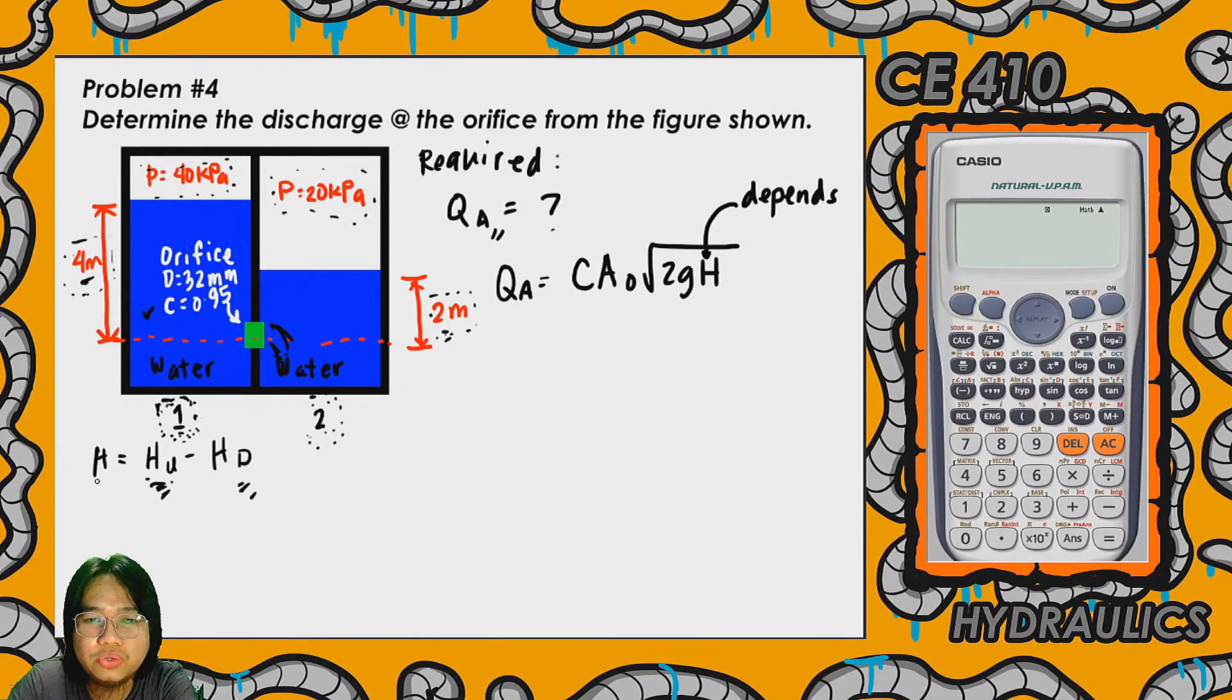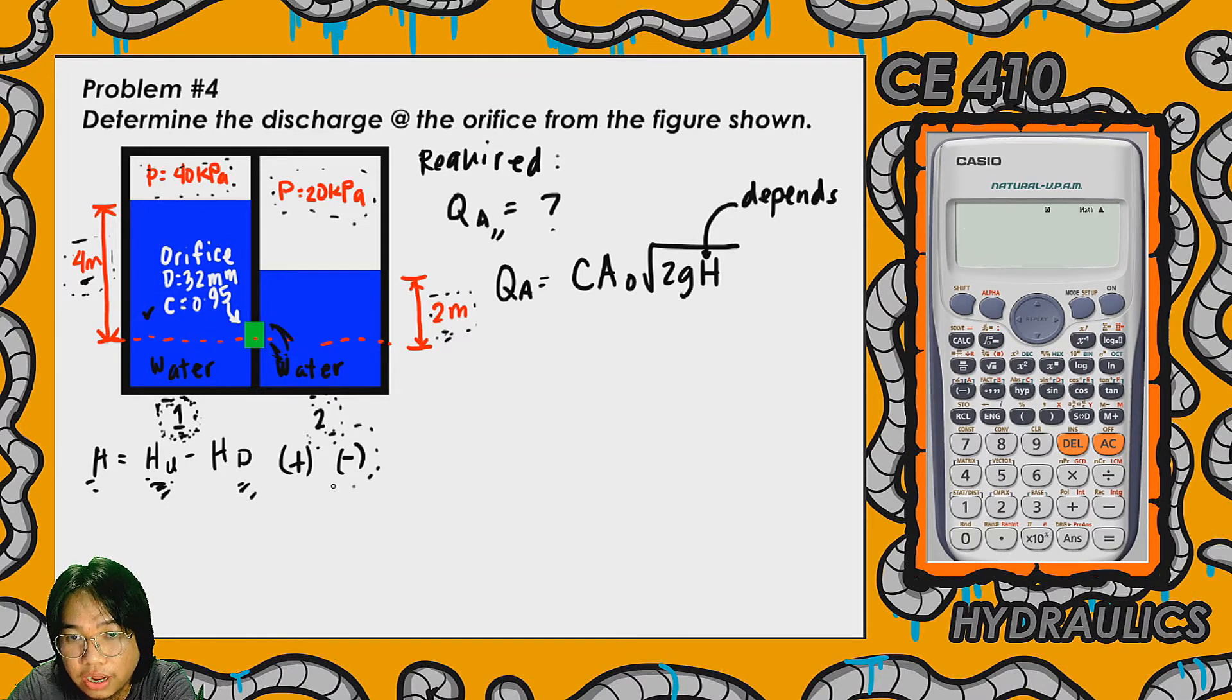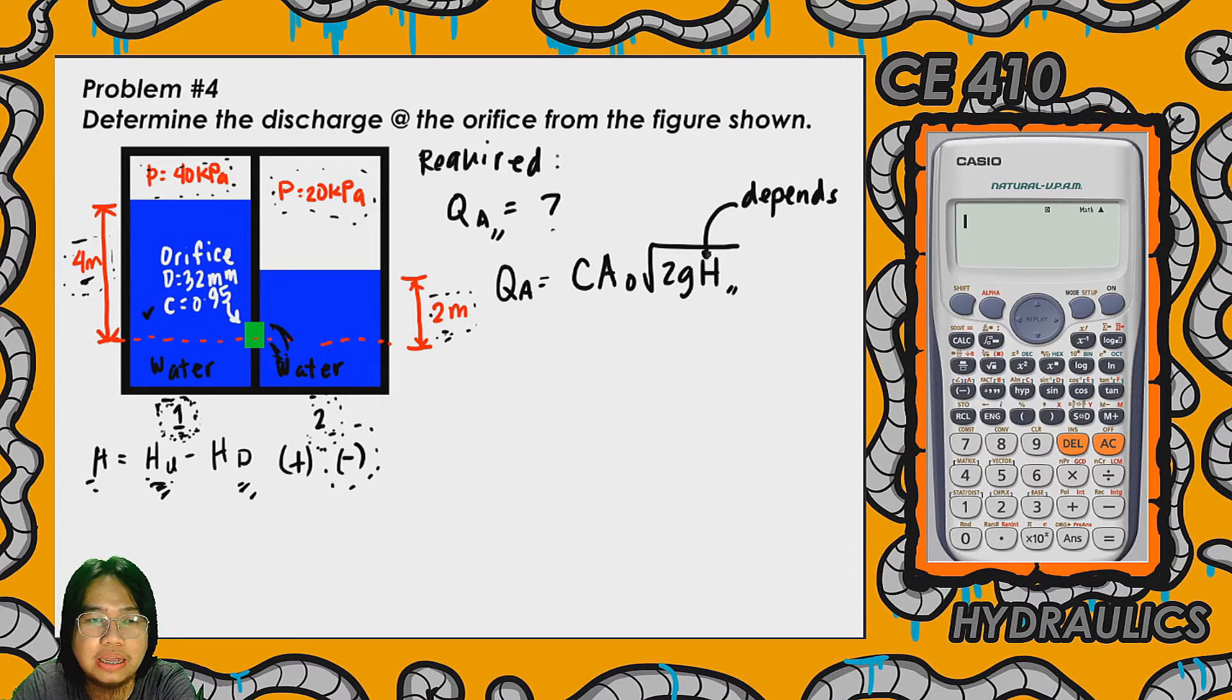The upstream reservoir has the greater energy head compared to the downstream reservoir. If we use this formula without inspecting the figure, there's no problem about that because if we assume chamber 1 is the upstream reservoir and the result is positive, then our assumption is correct. If we get a negative answer, our assumption is wrong, because we can't write negative value here in the formula - this is a radical sign and the answer will become imaginary.